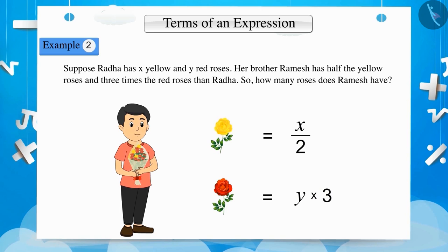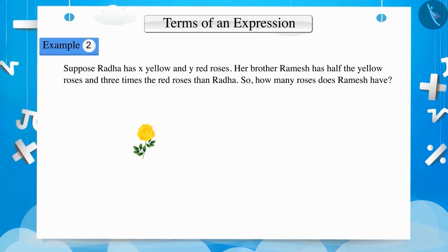Similarly, to represent the total number of roses that Ramesh has, we will find the sum of both yellow and red roses. Therefore, we get an expression X by 2 plus 3Y.